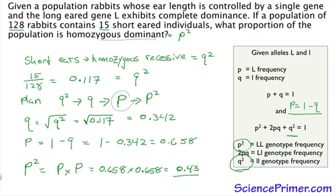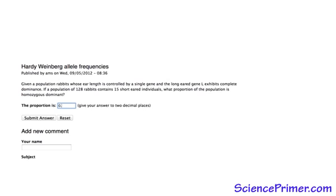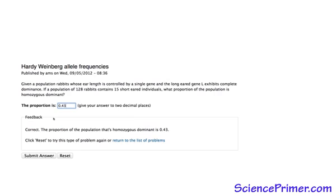Switch back over to the website. Put 0.43 in as an answer. Press submit. And after a moment, we see that we are correct. The proportion of the population that is homozygous dominant is 0.43.